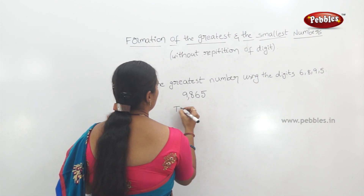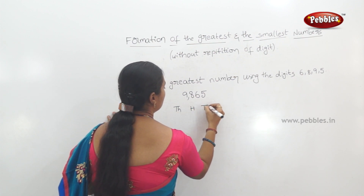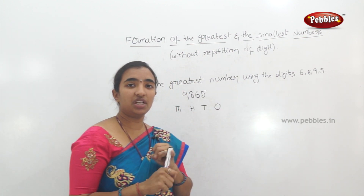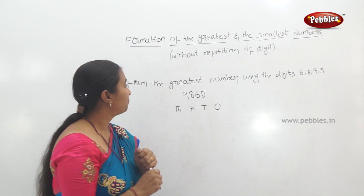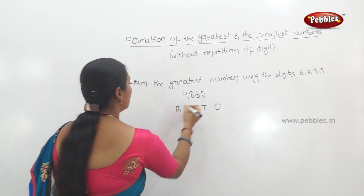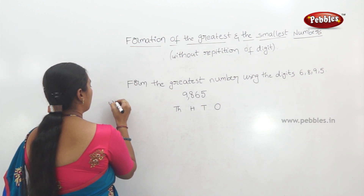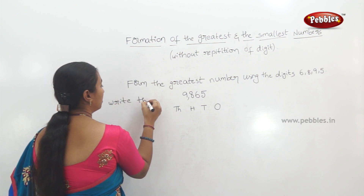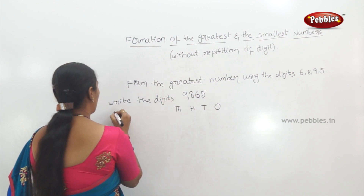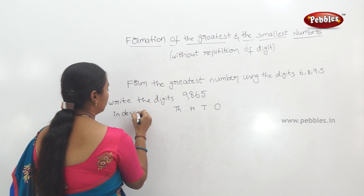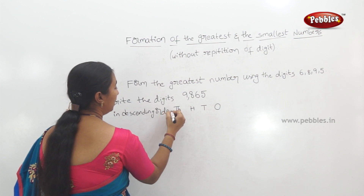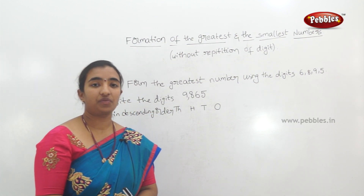In the place value table: 1000s, 100s, 10s, and 1s. The digits in descending order are 9, 8, 6, 5. Write the digits in descending order.